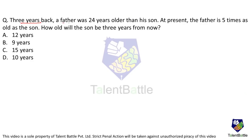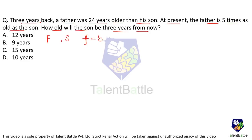Three years back, a father was 24 years older than his son. At present, the father is 5 times as old as the son. How old will the son be 3 years from now? Let the present age of the father be F and that of the son be S. The present relation is F = 5S.